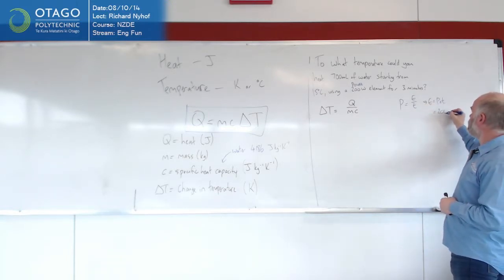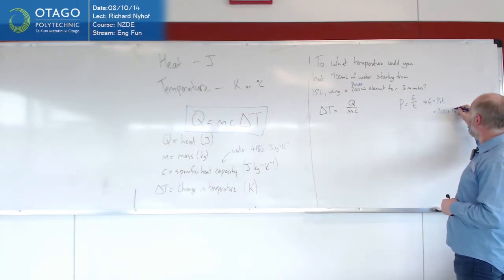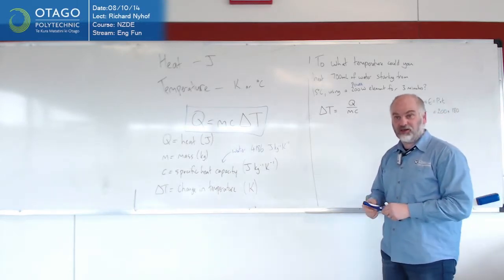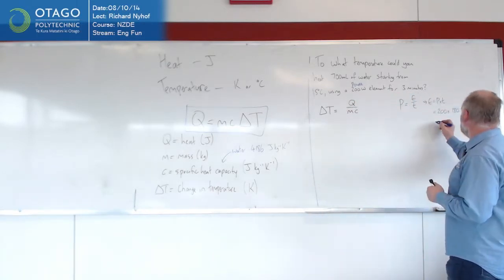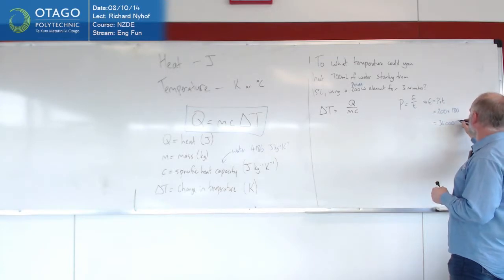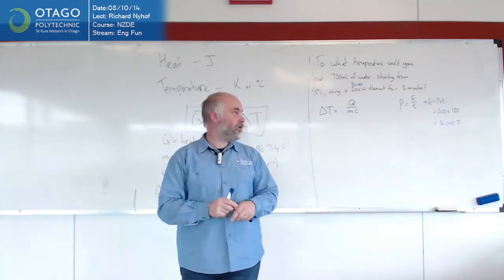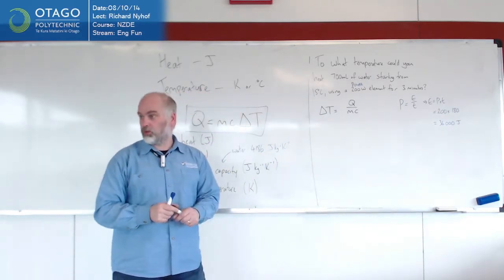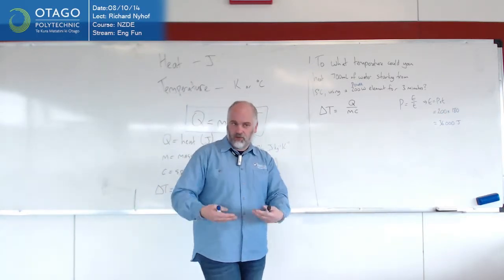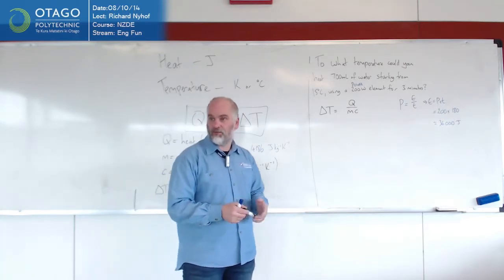My power is 200 watts times the time is three minutes, which is 180 seconds, because time here has to be in seconds. It's a standard SI unit thing. So we've got 200 times 180 is 36,000 joules. So the amount of energy we've got available is 36,000 joules. If you run 200 watts for three minutes, you're using 36,000 joules. That's the amount of measure of energy.